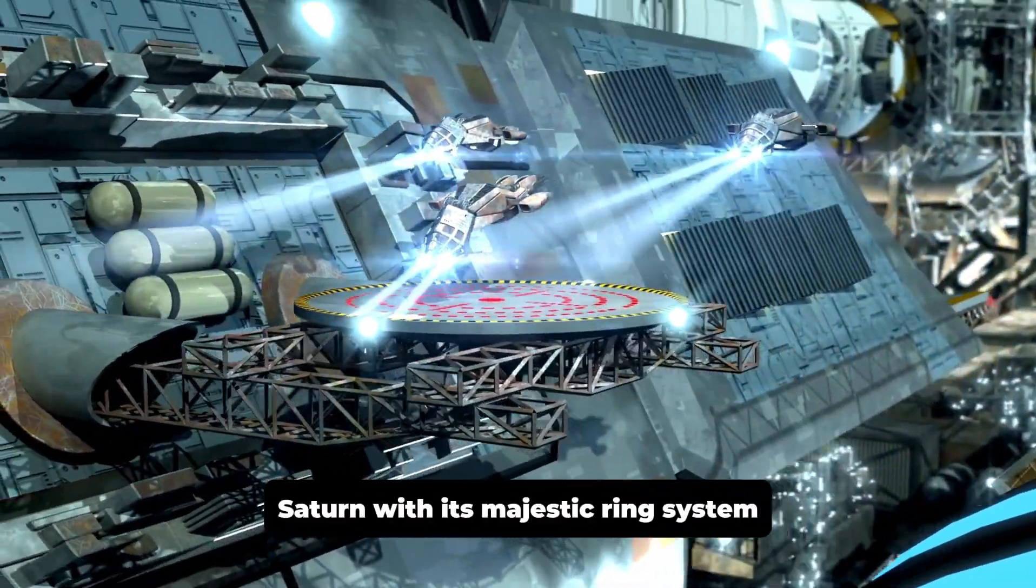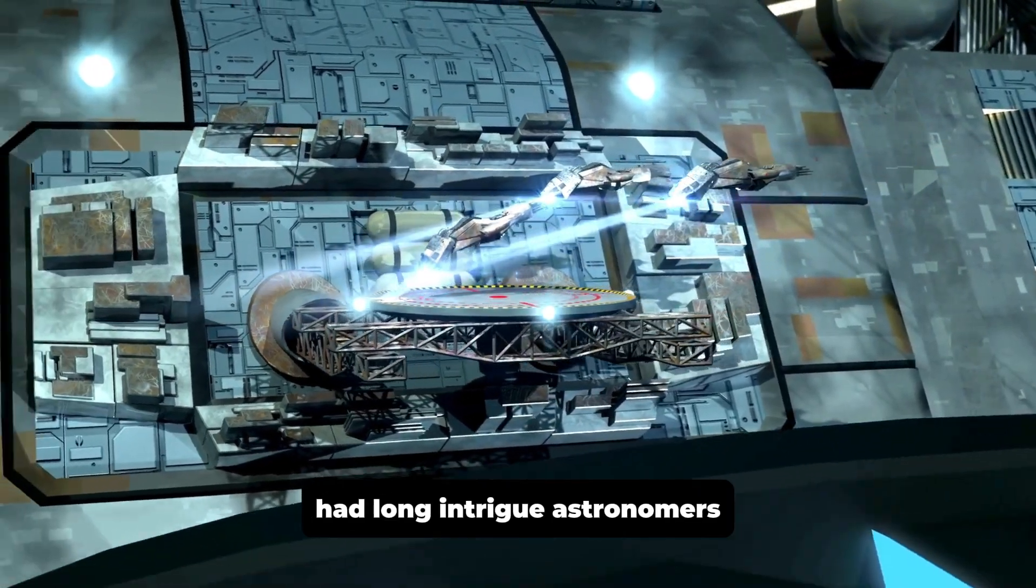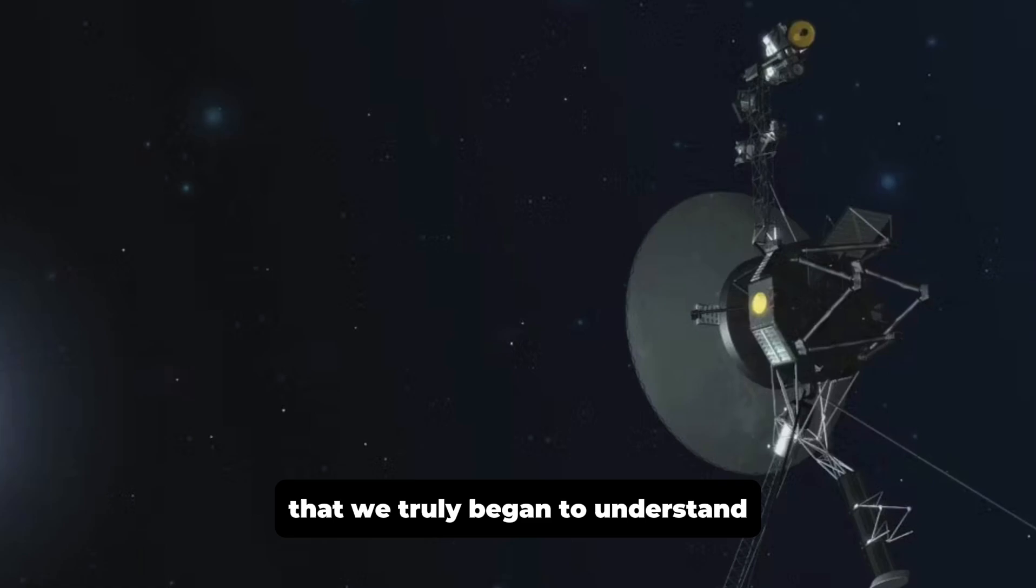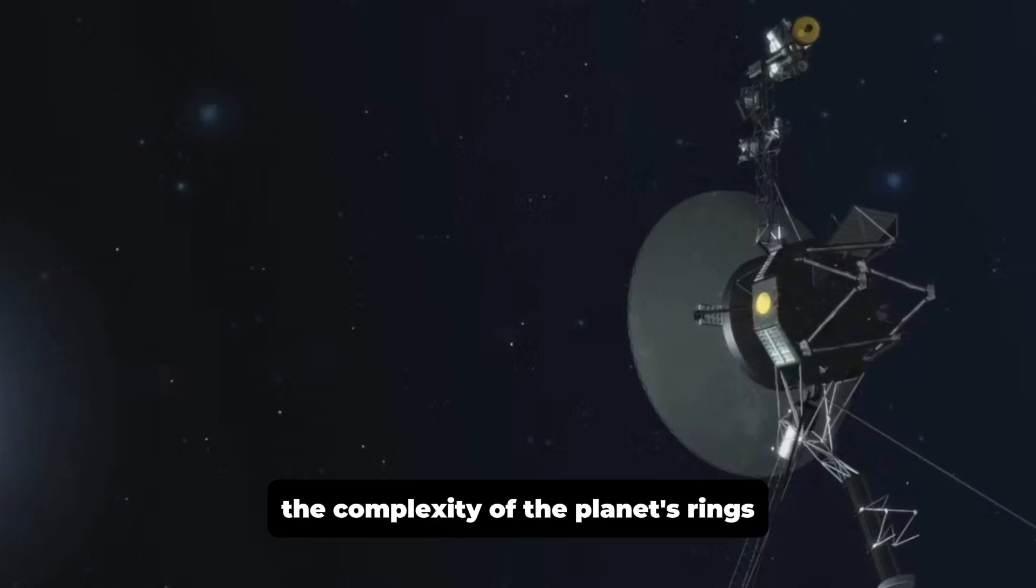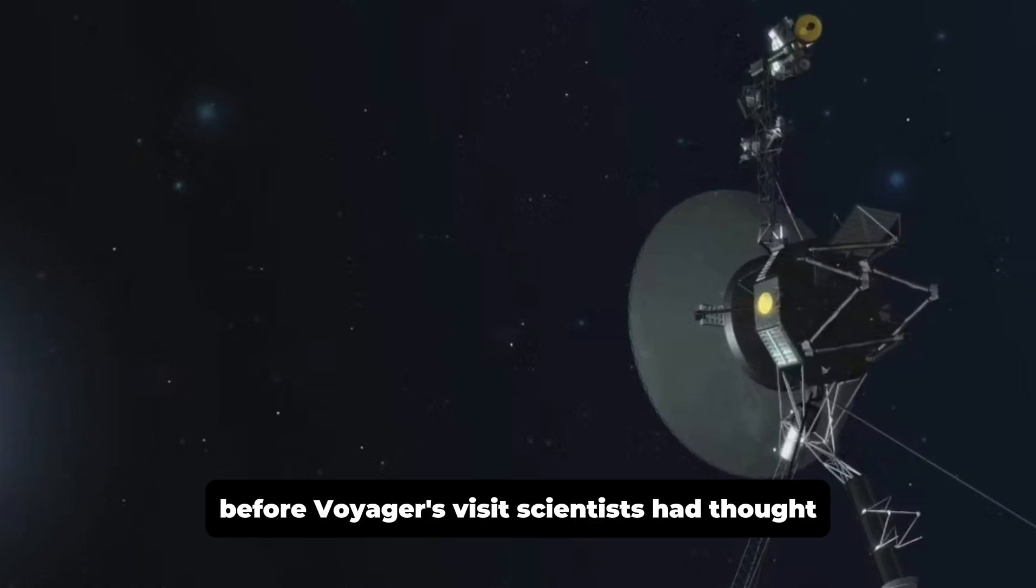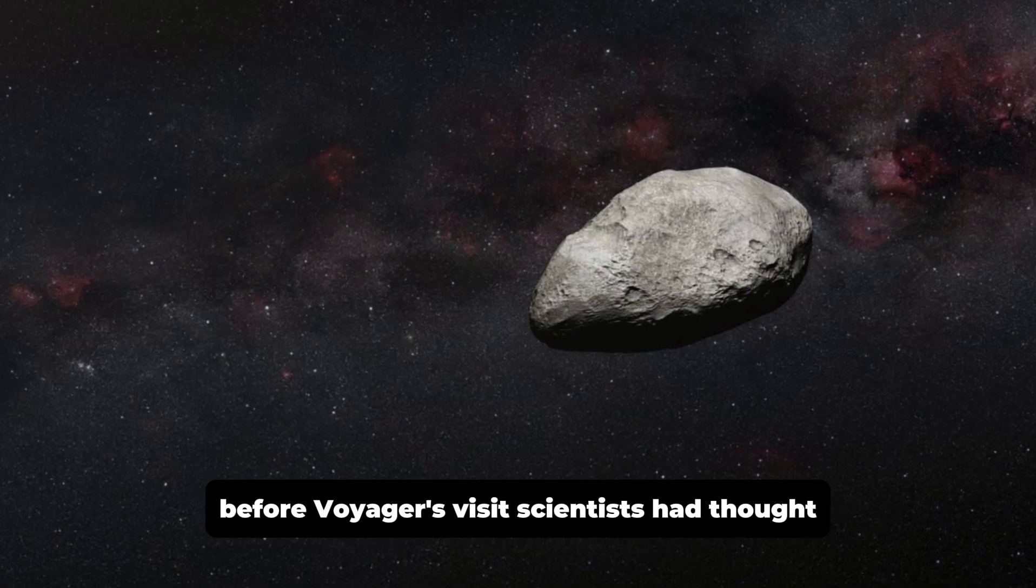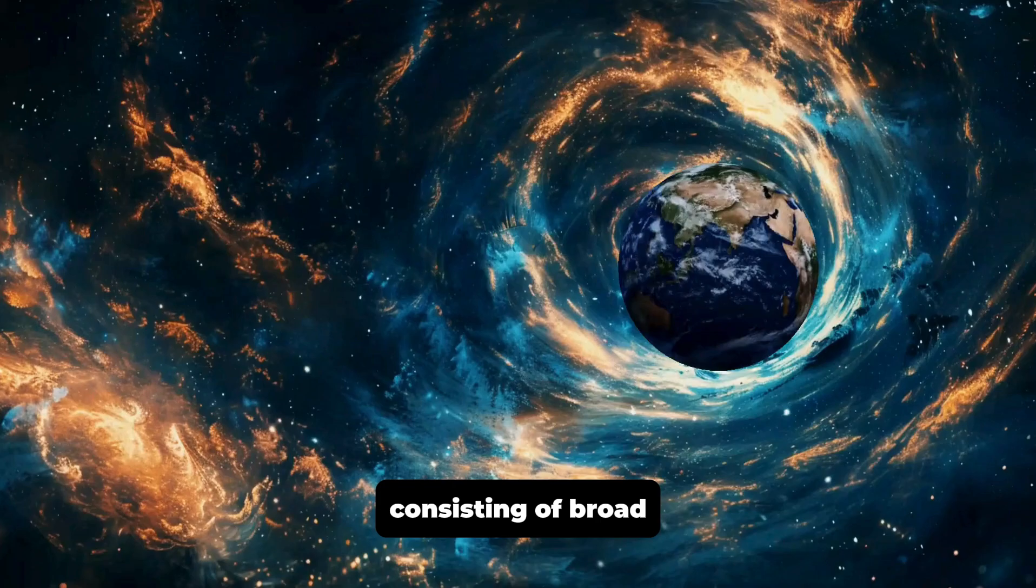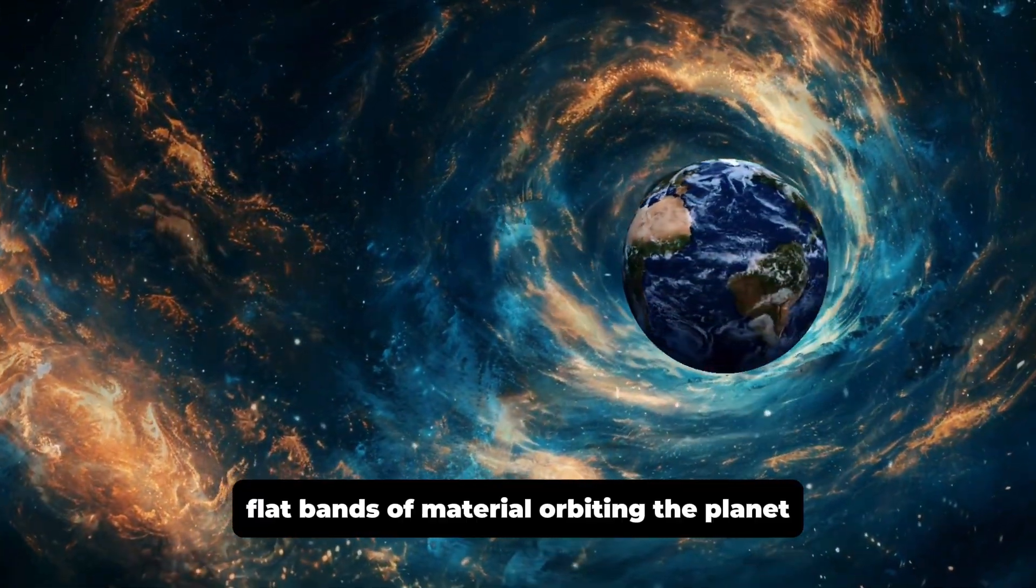Saturn, with its majestic ring system, had long intrigued astronomers. But it wasn't until Voyager's close flybys that we truly began to understand the complexity of the planet's rings. Before Voyager's visit, scientists had thought Saturn's rings were relatively simple, consisting of broad, flat bands of material orbiting the planet.